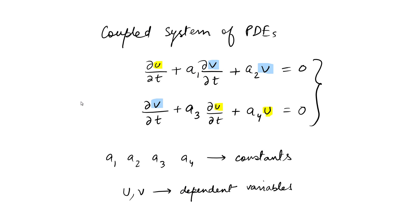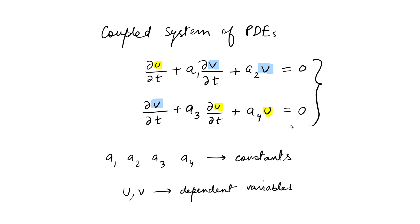In this tutorial we will be modeling a coupled system of PDEs. Here is a basic example: we have du/dt plus a constant times dv/dt plus a constant times v equals zero, and another equation dv/dt plus a constant times dv/dt plus another constant times u equals zero. Here a1 to a4 are constants and u, v are dependent variables.